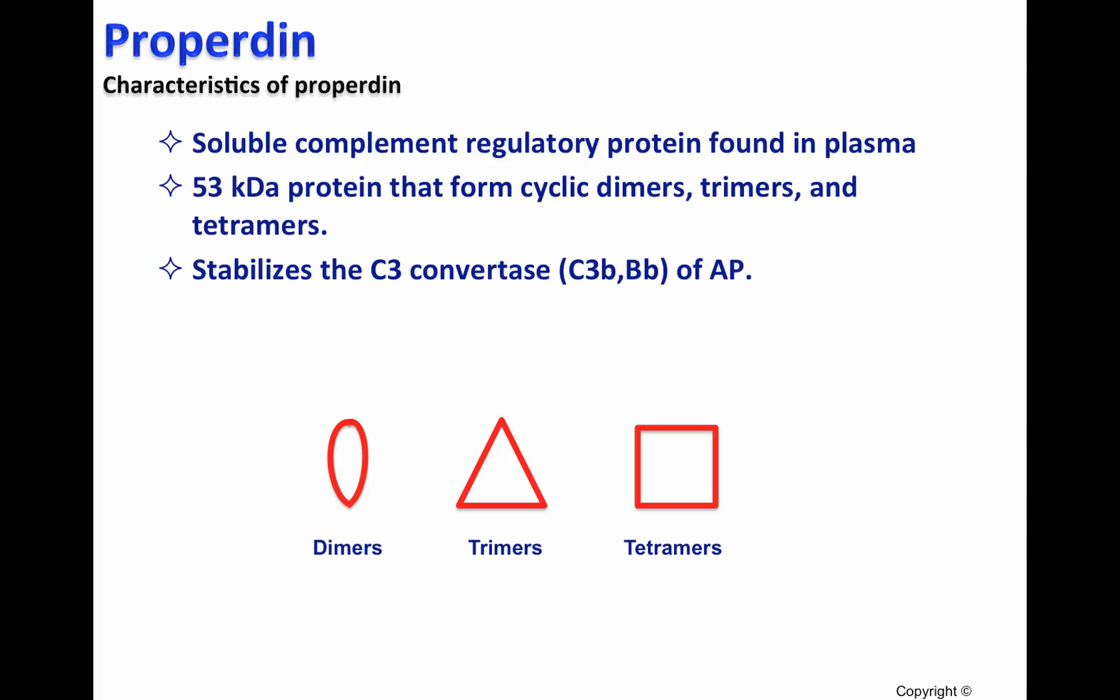The most important function of properdin is that it's able to stabilize the C3 convertase, C3b, Bb, of the alternative pathway, which means that properdin extends the half-life of the C3 convertase, allowing more C3b deposition on the cell surface of pathogens. C3b deposition is important in the process of opsonization and phagocytosis that is covered in other videos.